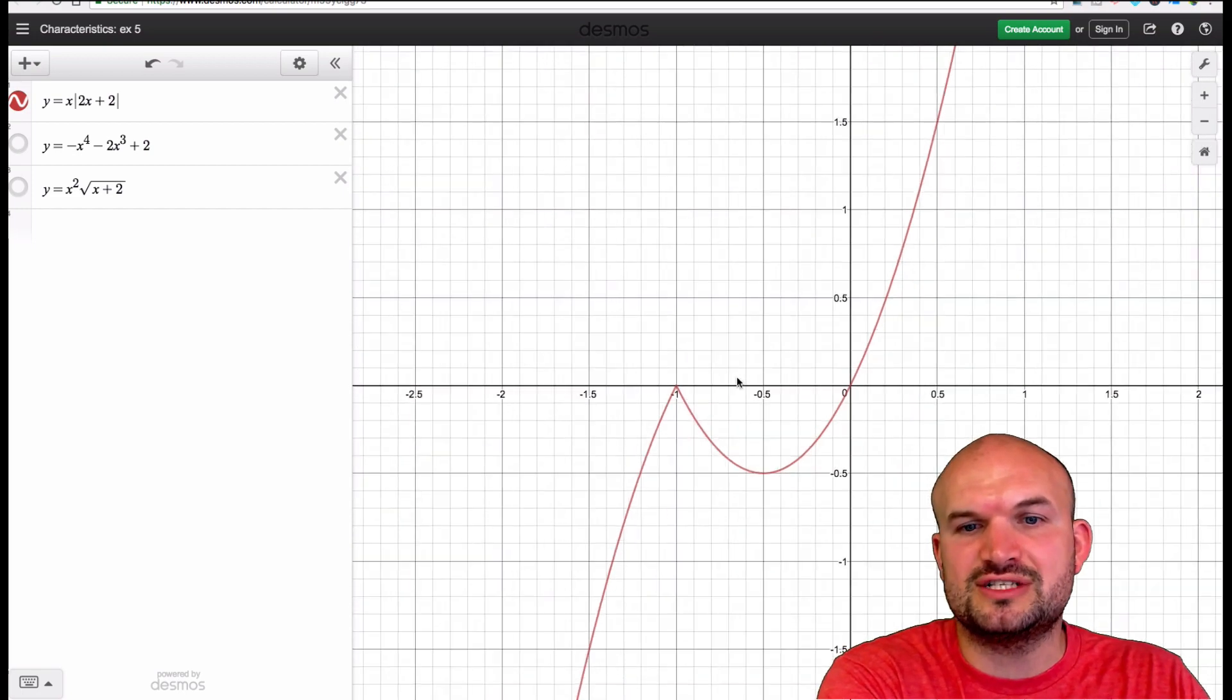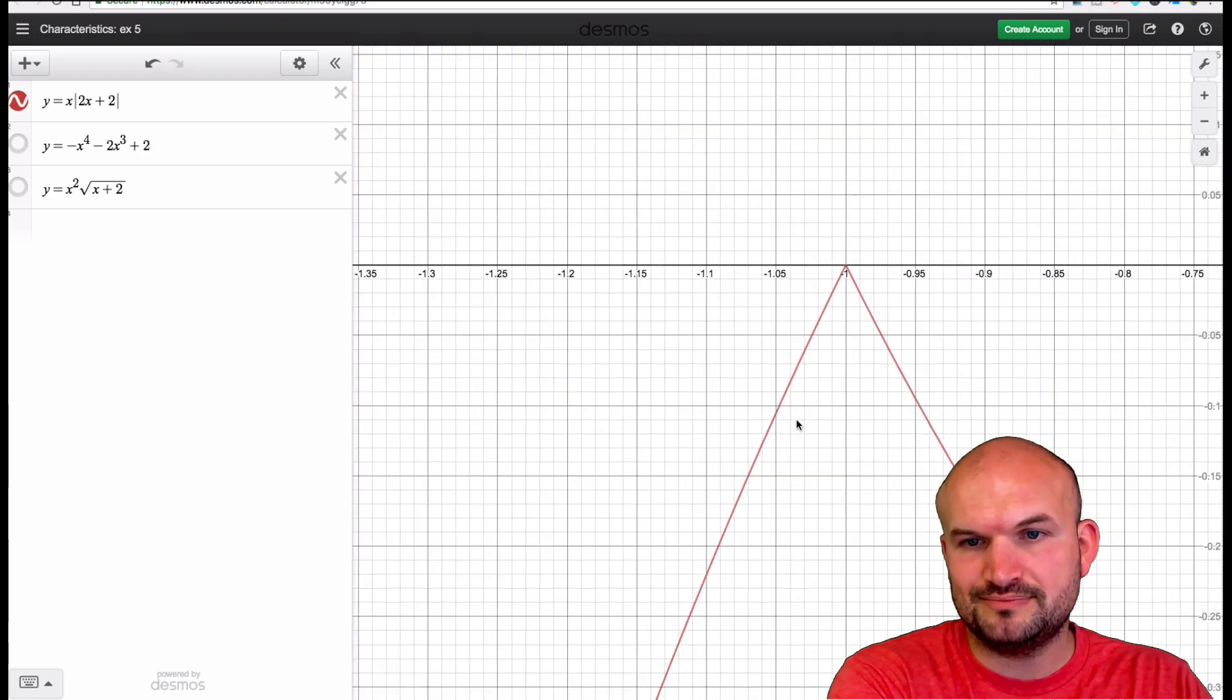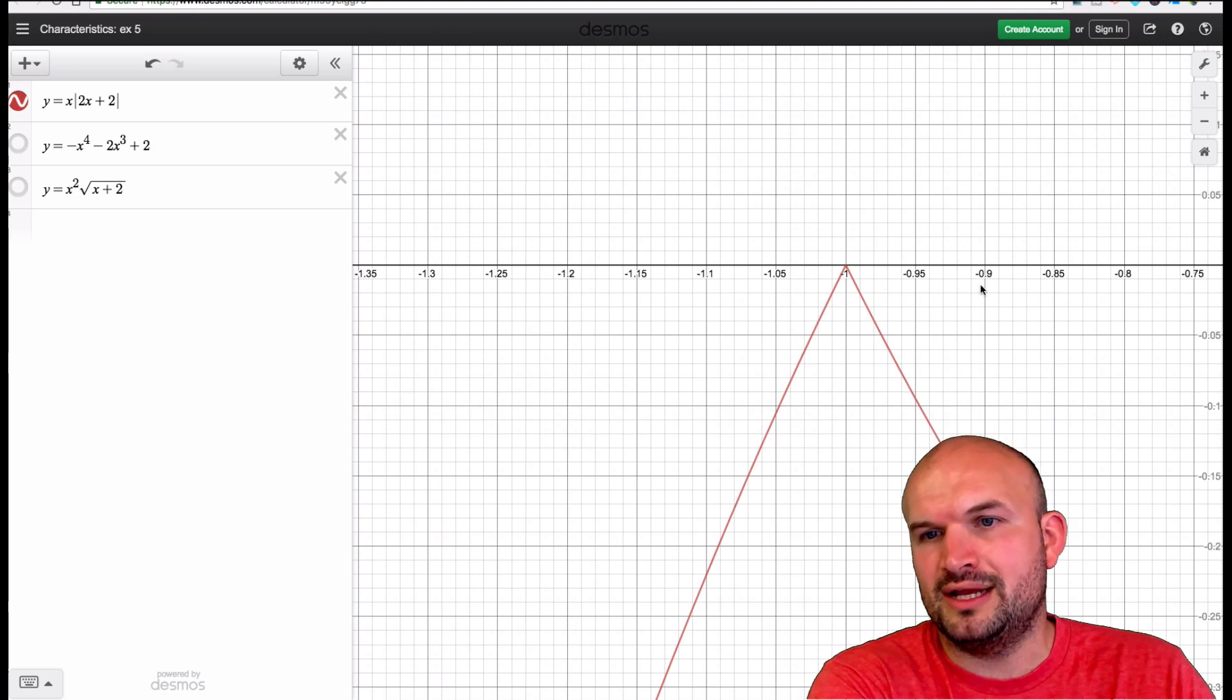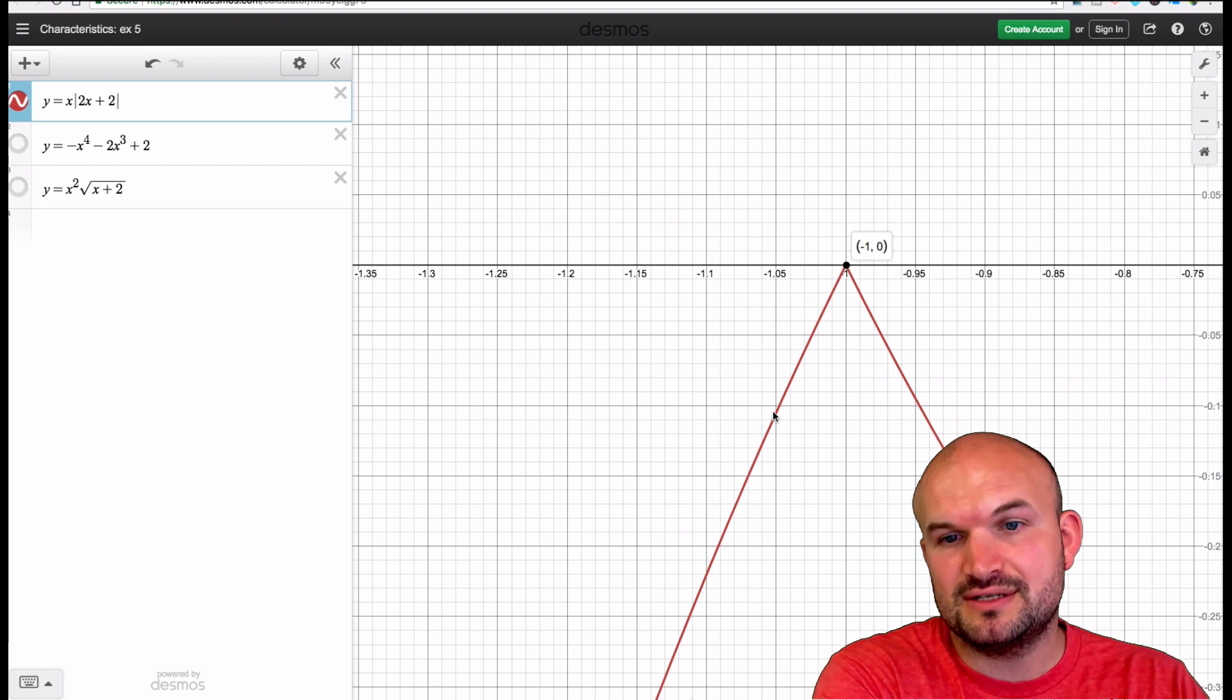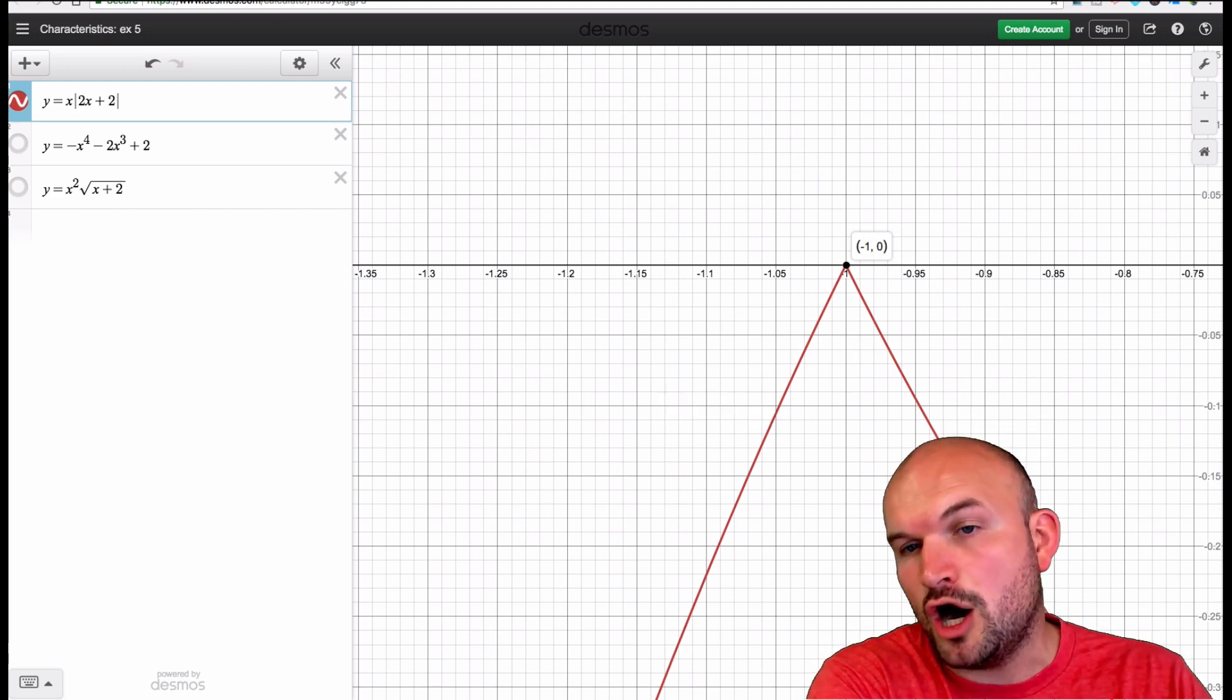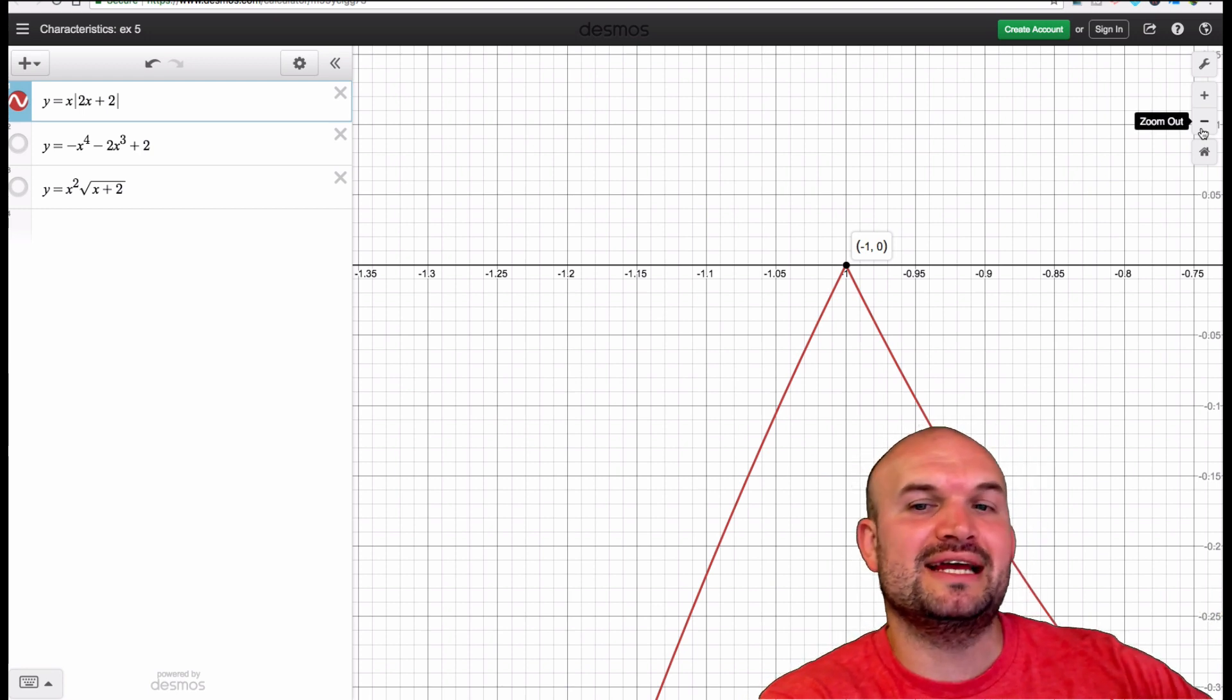But what we do want to do is understand why these are what we call relative max and relative mins. The reason is, when we zoom into this function, you can see on a given interval, let's say between negative 1.1 and negative 0.9, this value, this point negative 1, 0, is the maximum between any two intervals of x values. Because if I pick a point to the left of that, the y value is negative. If I pick a point to the right, the y value is negative.